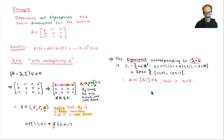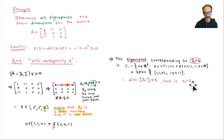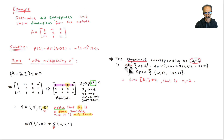The dimension of E1, the eigenspace corresponding to lambda_1, is 2 because we have two vectors. So lambda_1 equals 2, n_1 equals 2. The span of these two vectors is called eigenspace E1, its size is 2, and we call it n_1 because it corresponds to lambda_1.